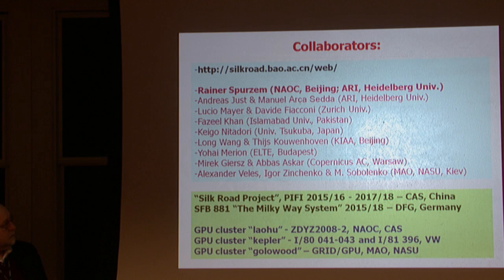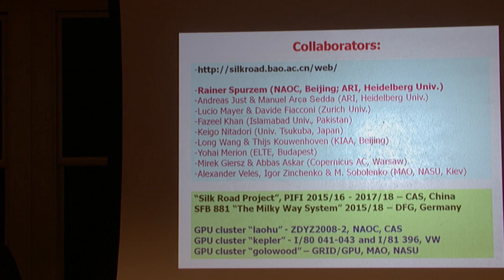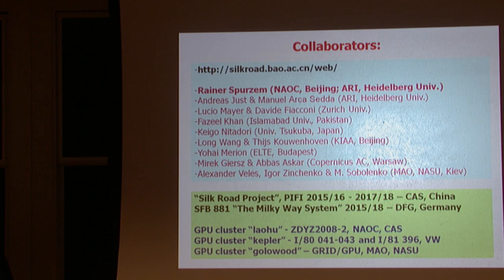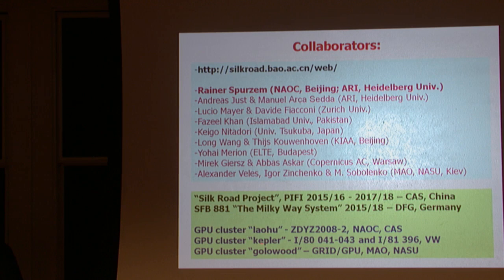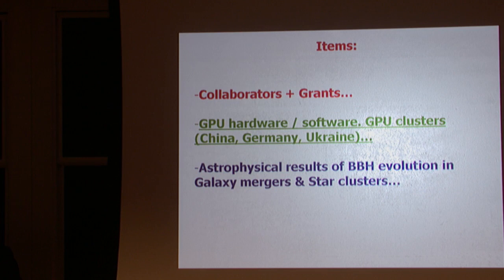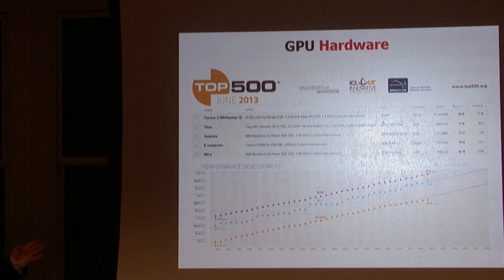The two main funding sources in recent years were the so-called Silk Road project at the National Astronomical Observatory of China, and a President's International Fellowship which I've held at the Chinese Academy of Sciences. In Germany we're constantly working in the SFB 881 special program, funded by the German Science Foundation DFG, under the name 'The Milky Way System.' Basically the money and hardware support went to three clusters — in Beijing, Germany, and Ukraine — so I can concentrate on the GPU work.